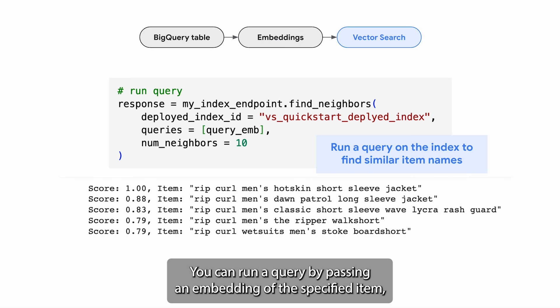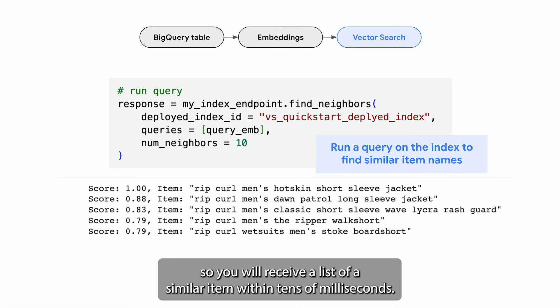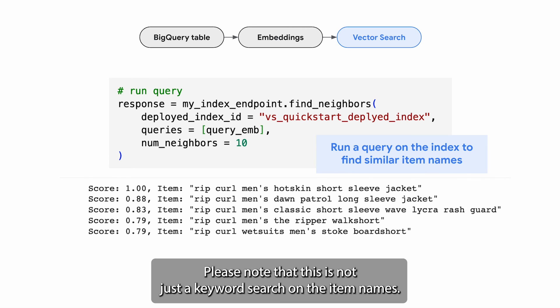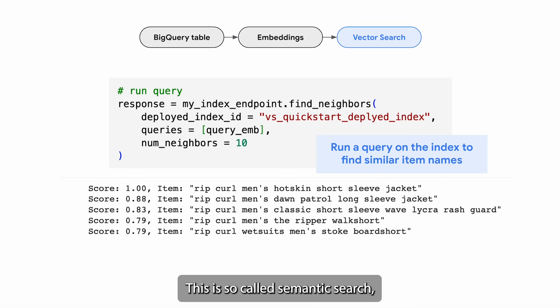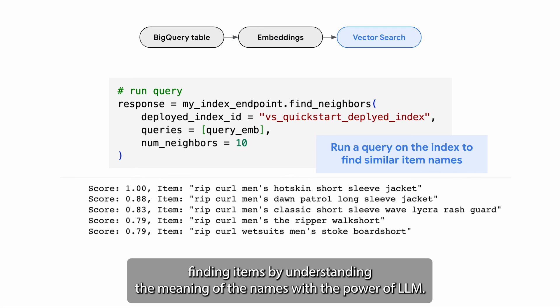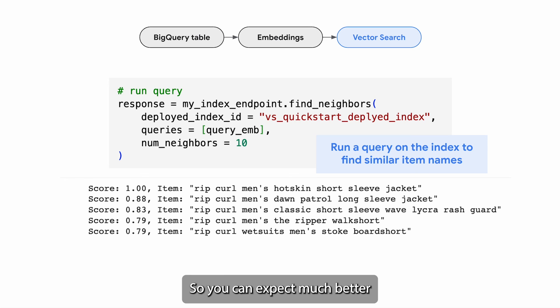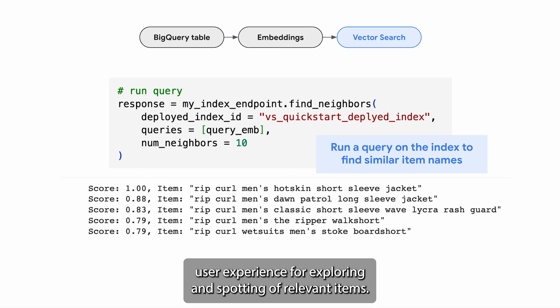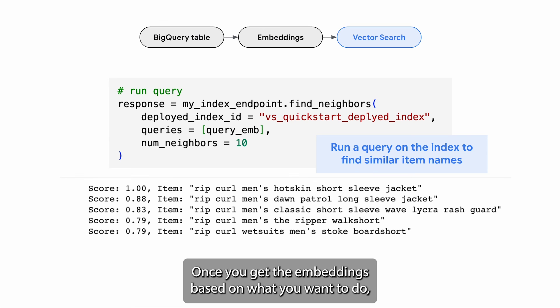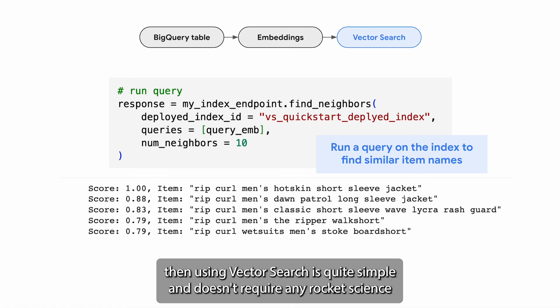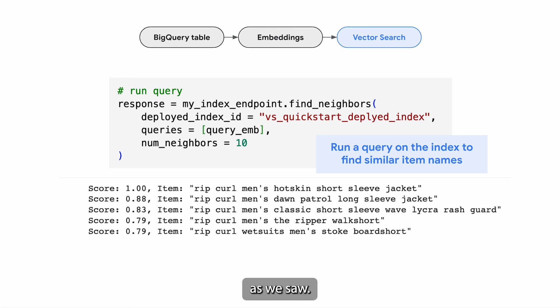You can run a query by passing an embedding of the specified item, and you will receive a list of similar items within tens of milliseconds. Note that this is not just a keyword search on item names — this is a so-called semantic search, finding items by understanding the meaning of the names with the power of LLM. So you can expect a much better user experience for exploring and spotting relevant items.